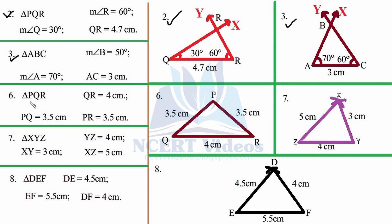For the sixth triangle PQR, which is isosceles with two equal sides: take the base QR using a ruler, then verify the side-sum property — 4 plus 3.5 equals 7.5, greater than 3.5, and 7 greater than 4. Since it is an isosceles triangle, the base angles will be equal. Adjust compasses and draw arcs from each end to locate the apex.